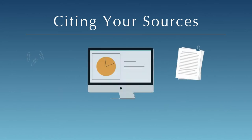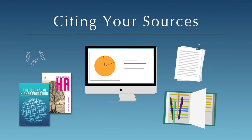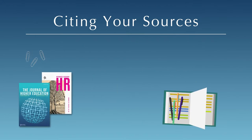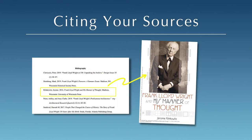When you do research for a paper or project, you need to cite or document your sources. To cite means to identify the sources you used in your work, and all the details for one source are called a citation. Properly citing the articles or books you used in your project will help others find the source and will help you avoid academic dishonesty.